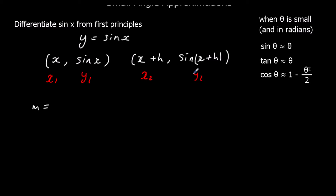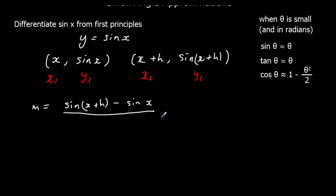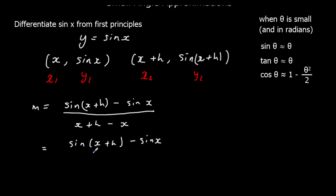So the gradient is the change in y — y2 minus y1 — which is sine(x+h) minus sine(x), over x2 minus x1, which is x plus h minus x. And that bottom simplifies to just h.